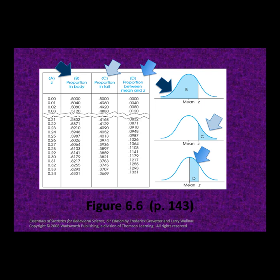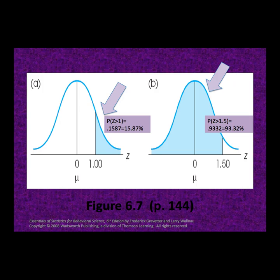Note, as you peruse the z-table, that all of the z-scores are positive values. That is because the distribution is symmetric. We will have to use the fact that the distribution is symmetric to answer questions involving negative z-scores, which represent scores that fall below the mean.